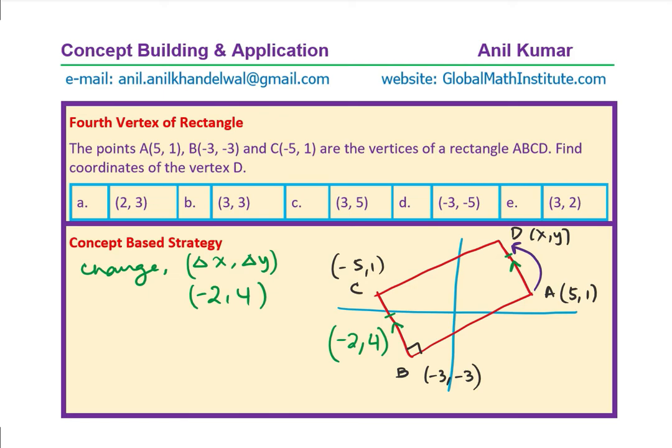A values are 5,1. And if we add this change, which is (-2, 4), we get the coordinates of D. 5 - 2 is 3 and 1 + 4 is 5. Do you see that? And we immediately get the answer, C. Do you get the idea? That is how we can easily find the coordinates of D. Perfect?